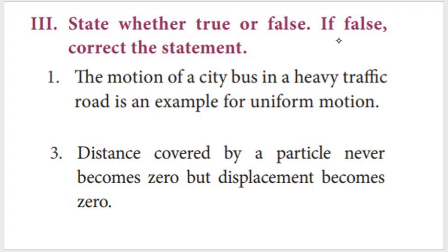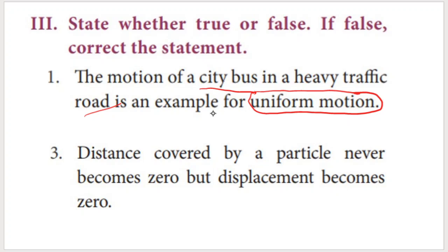State whether true or false; if false, correct the statement. Statement: The motion of a city bus in heavy traffic is an example of uniform motion. Think about uniform motion — an object covers equal distance in equal intervals of time. A city bus cannot cover equal distance in equal time periods, so this is false.